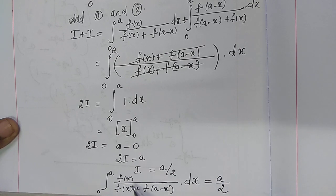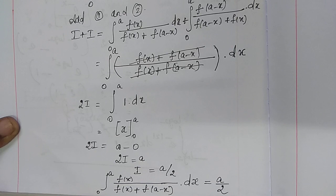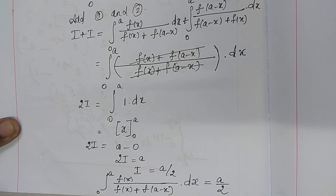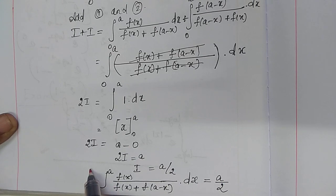Therefore, the integral from 0 to a of f(x) divided by f(x) plus f(a minus x), dx is equal to a by 2. Example 9.26 is complete.